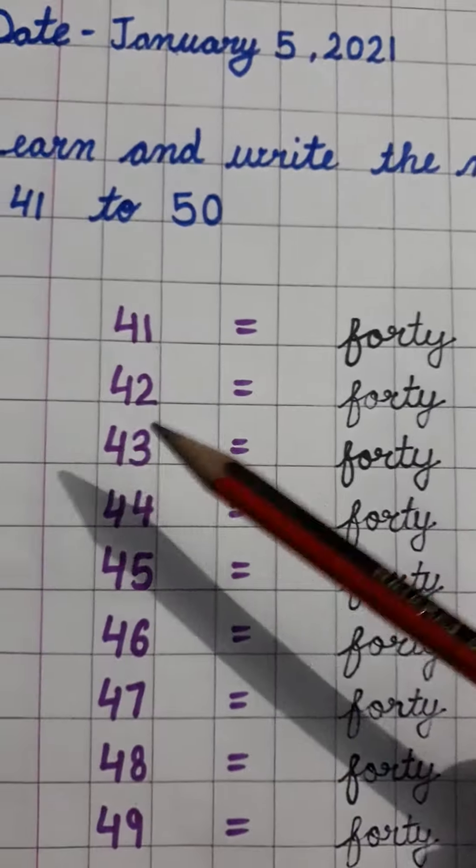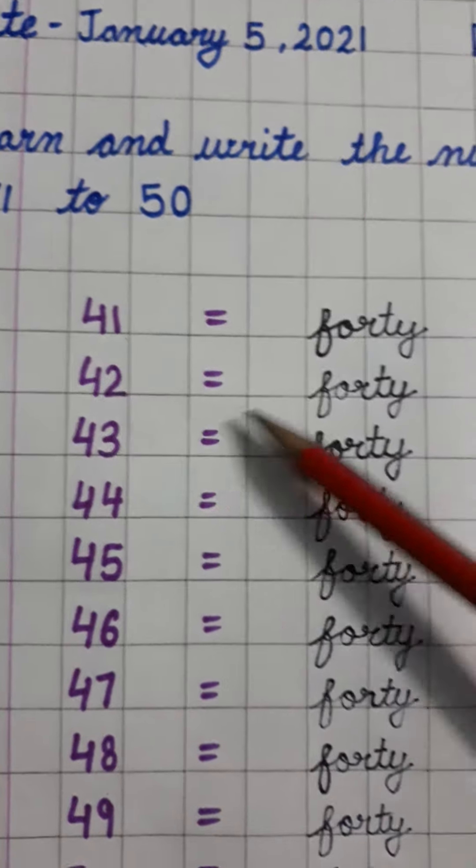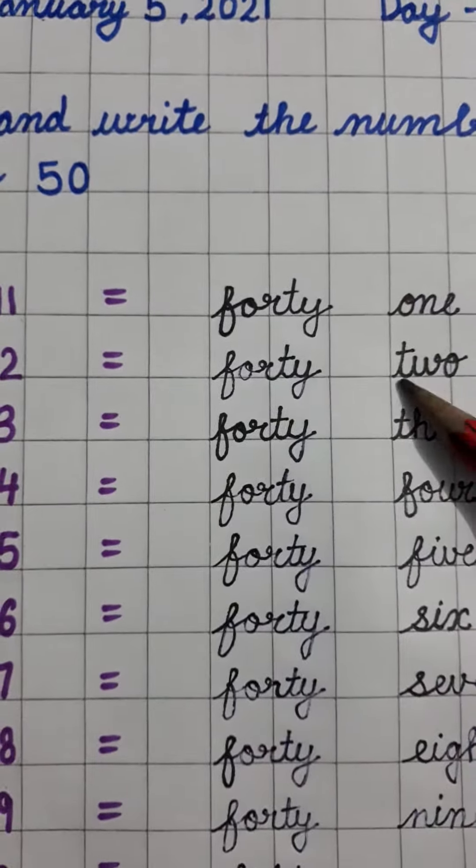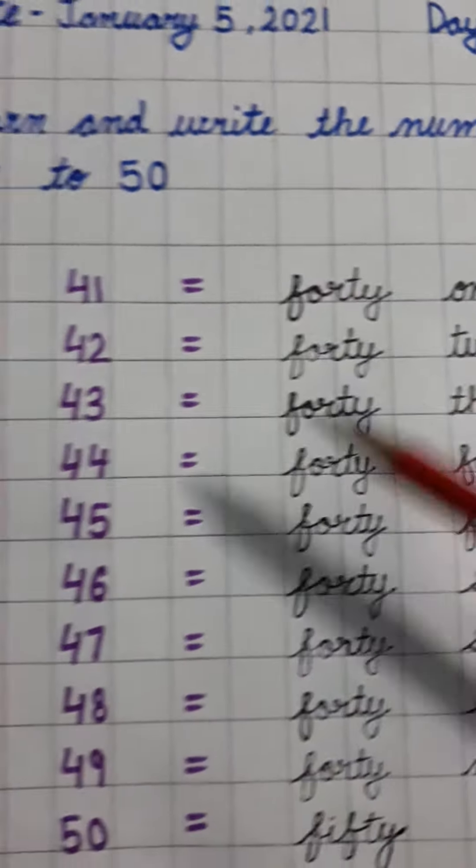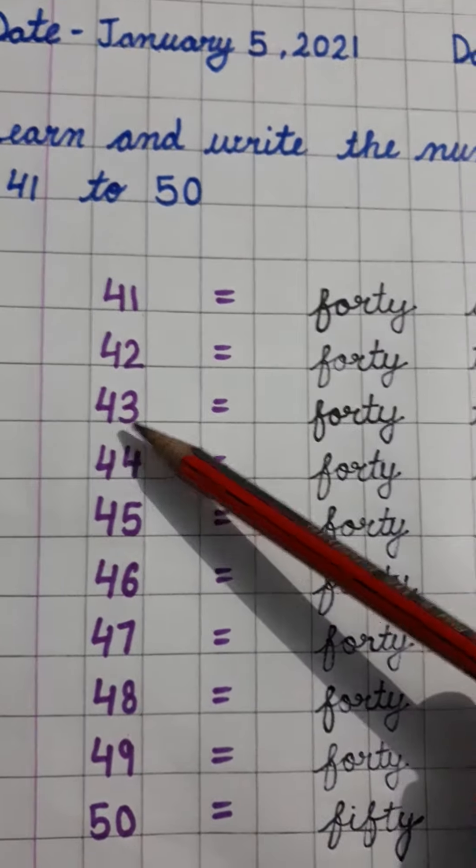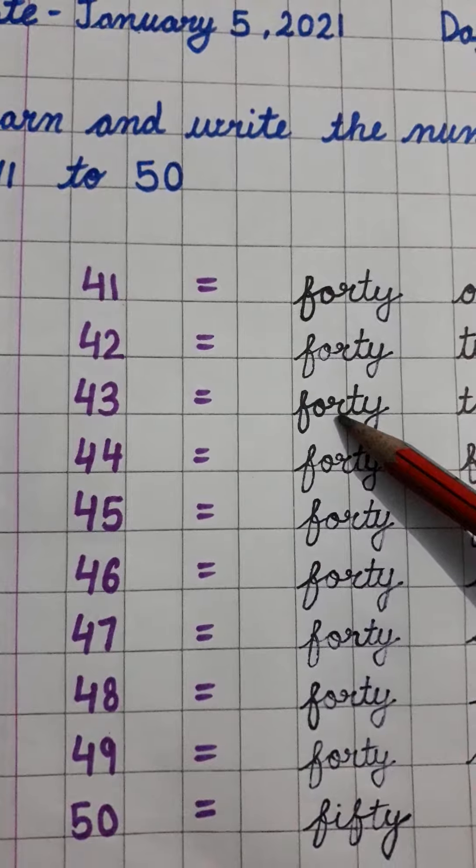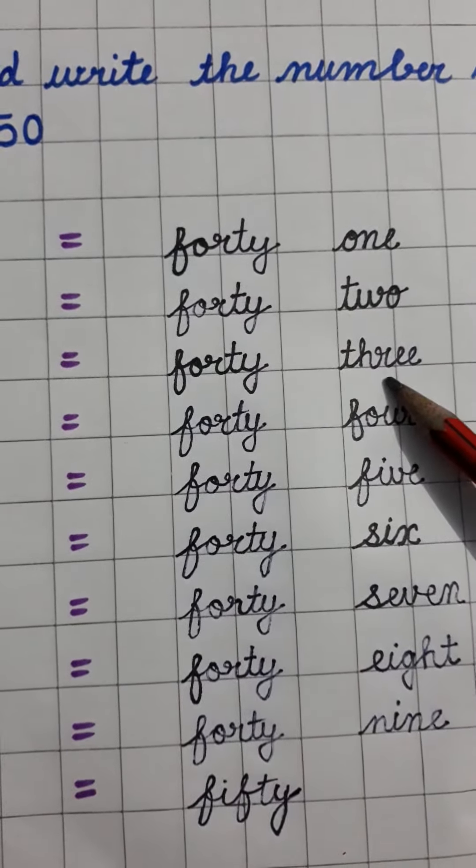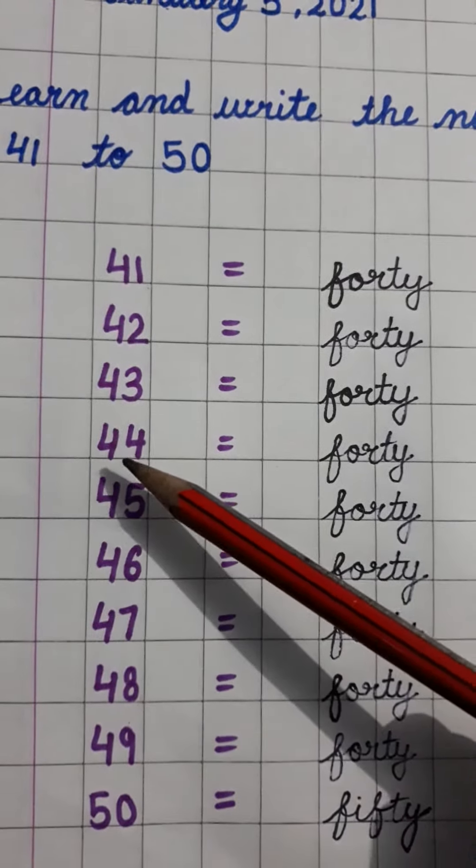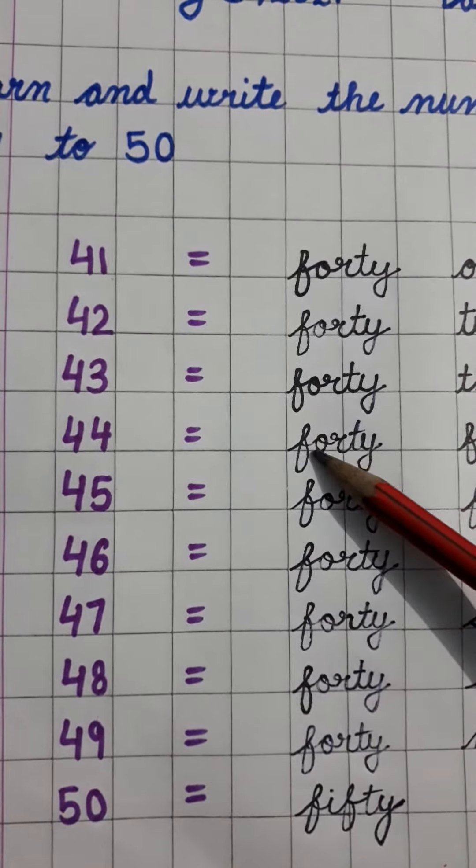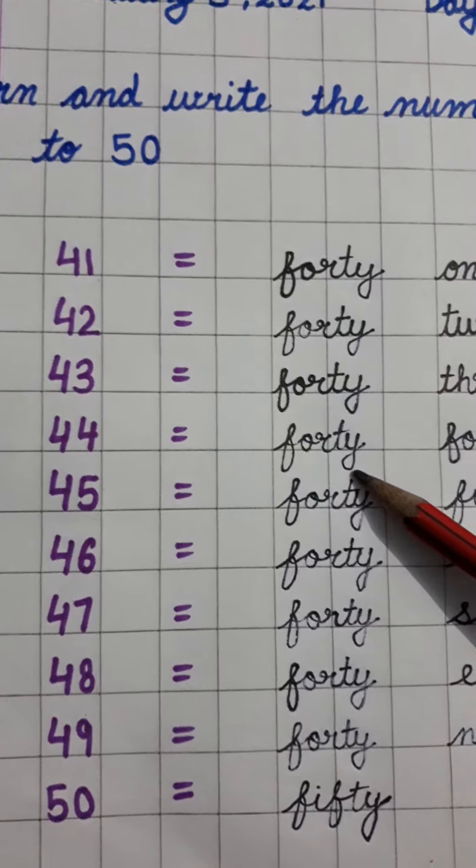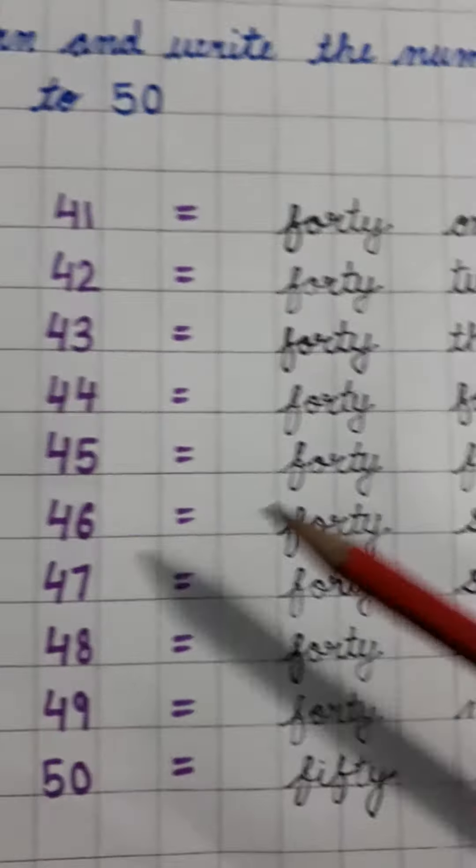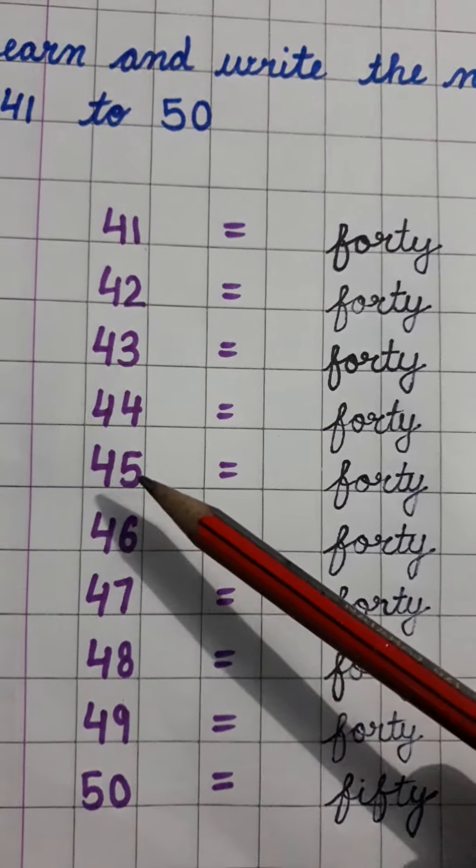42: F-O-R-T-Y, forty, T-W-O, two. 43: F-O-R-T-Y, forty, T-H-R-E-E, three. 44: F-O-R-T-Y, forty, F-O-U-R, four. Next is 45.